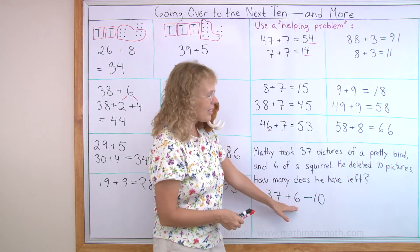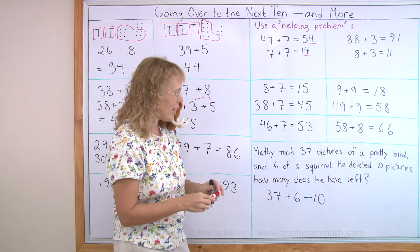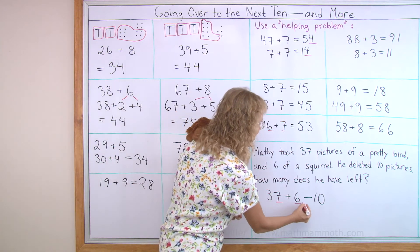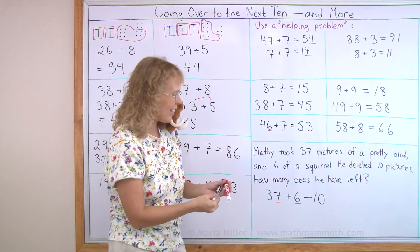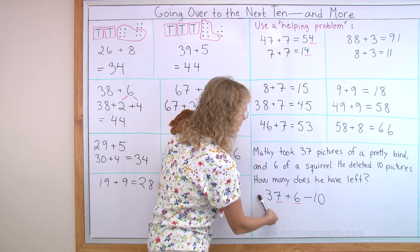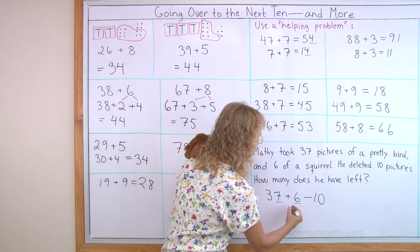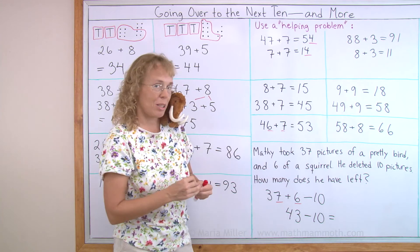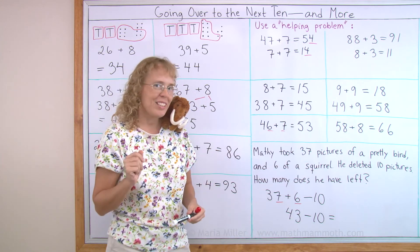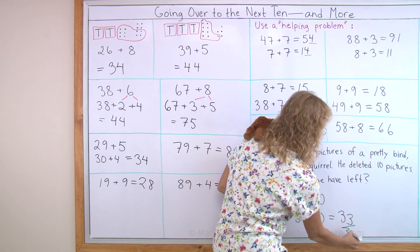37 plus 6. Now we can use the idea I explained here, the helping problem idea. Think of 7 and 6. 7 plus 6 is 13, which is 3 more than 10. So this here will be 3 more than the next 10, which will be 43. And now you subtract 10. You know how to do that. And we will get 33 pictures left.